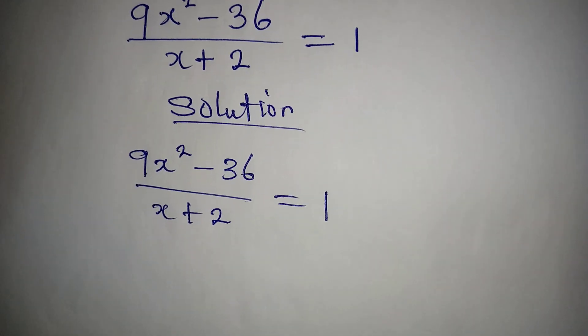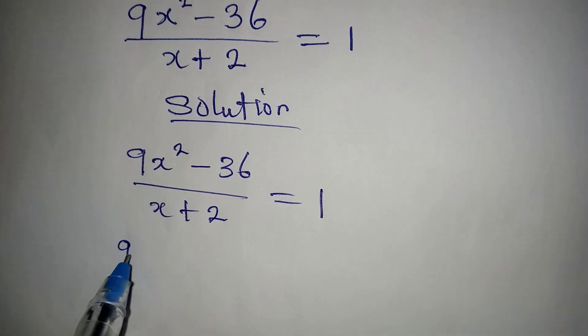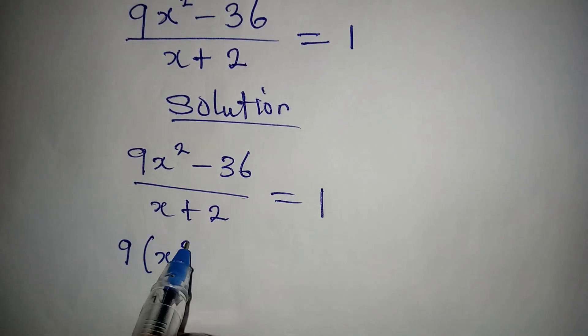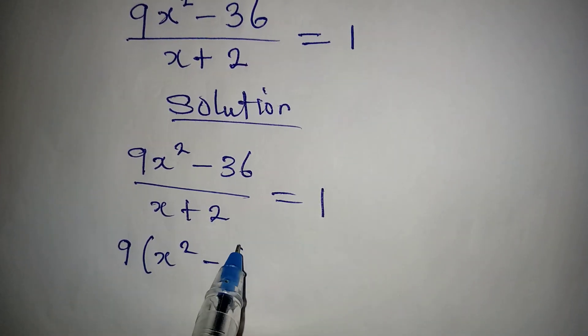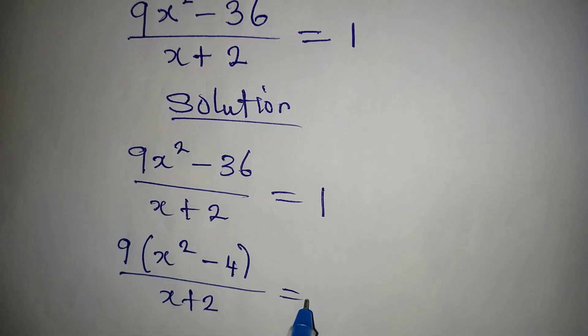Now this is what I want to do. Factor out 9 from the numerator. Then we have x squared minus 4, and this is over x plus 2 equal to 1.